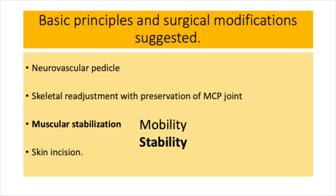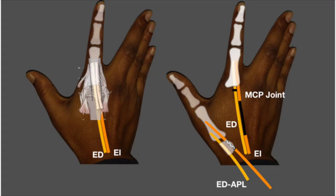Muscular stabilization is important for both mobility and stability; however, stability is given preference over mobility. The long flexors are left as-is and allowed to adapt to the new position over time. The extensor tendons — specifically the extensor digitorum communis to the index finger — are divided just proximal to the metacarpophalangeal joint, and after skeletal repositioning they are reattached to the proximal phalanx of the thumb, thereby functioning as the abductor pollicis longus. The extensor indicis is shortened by the same length as the metacarpal bone, and an end-to-end repair is done so it functions as the extensor pollicis longus.